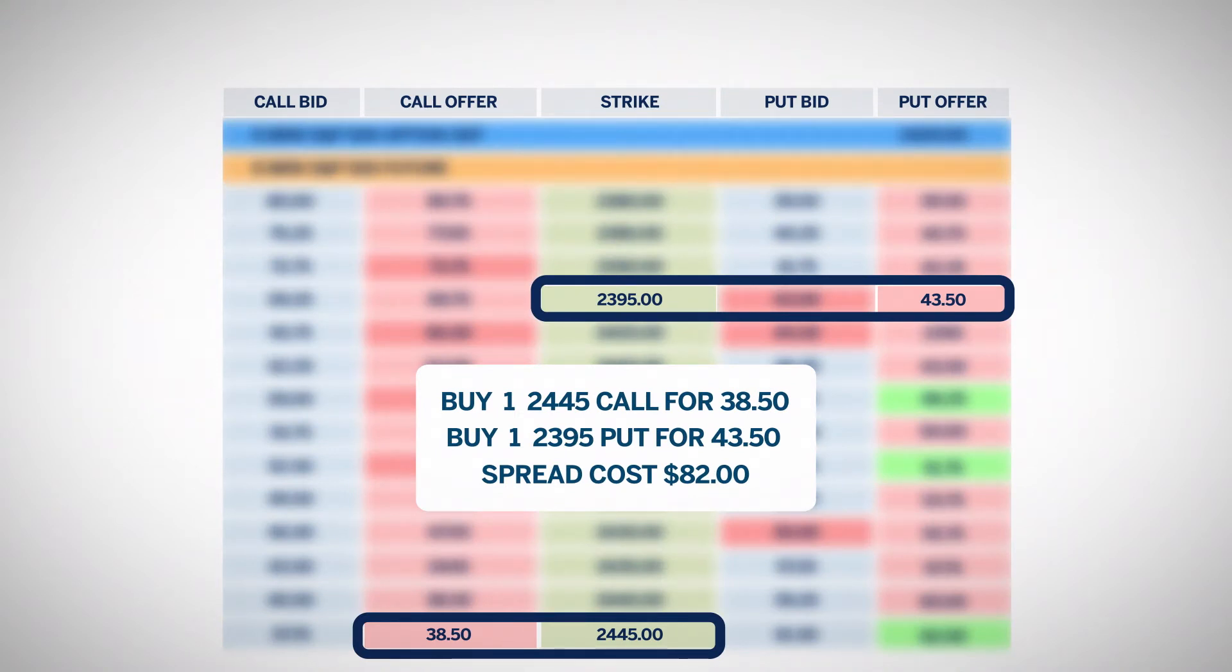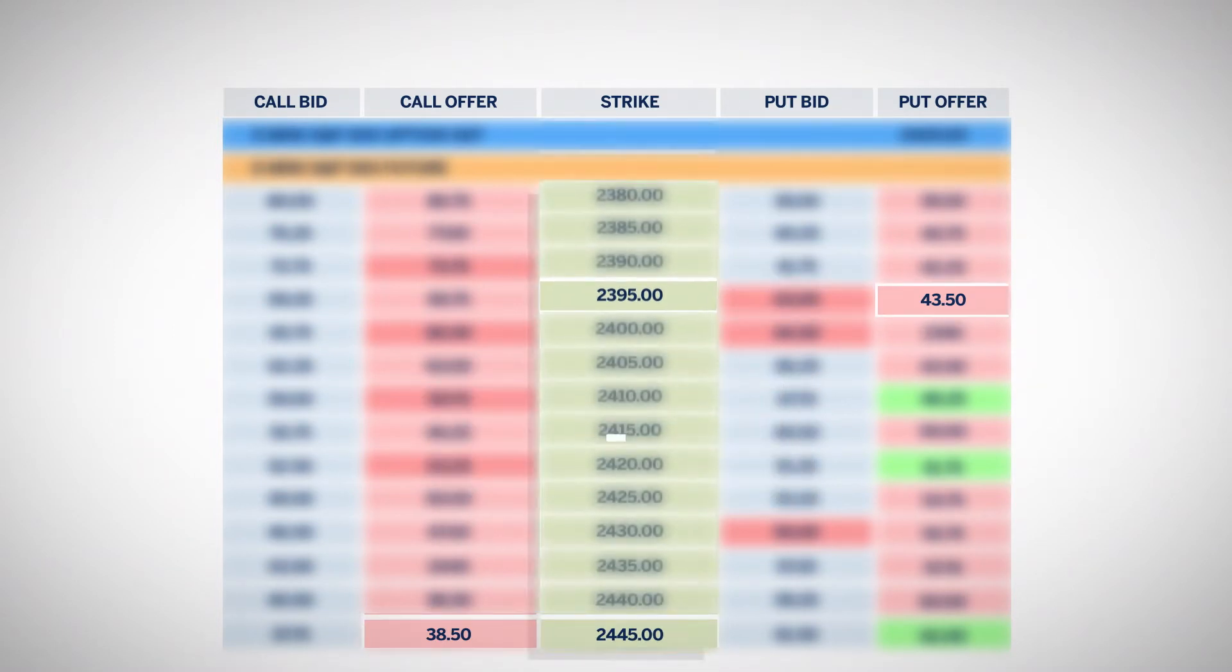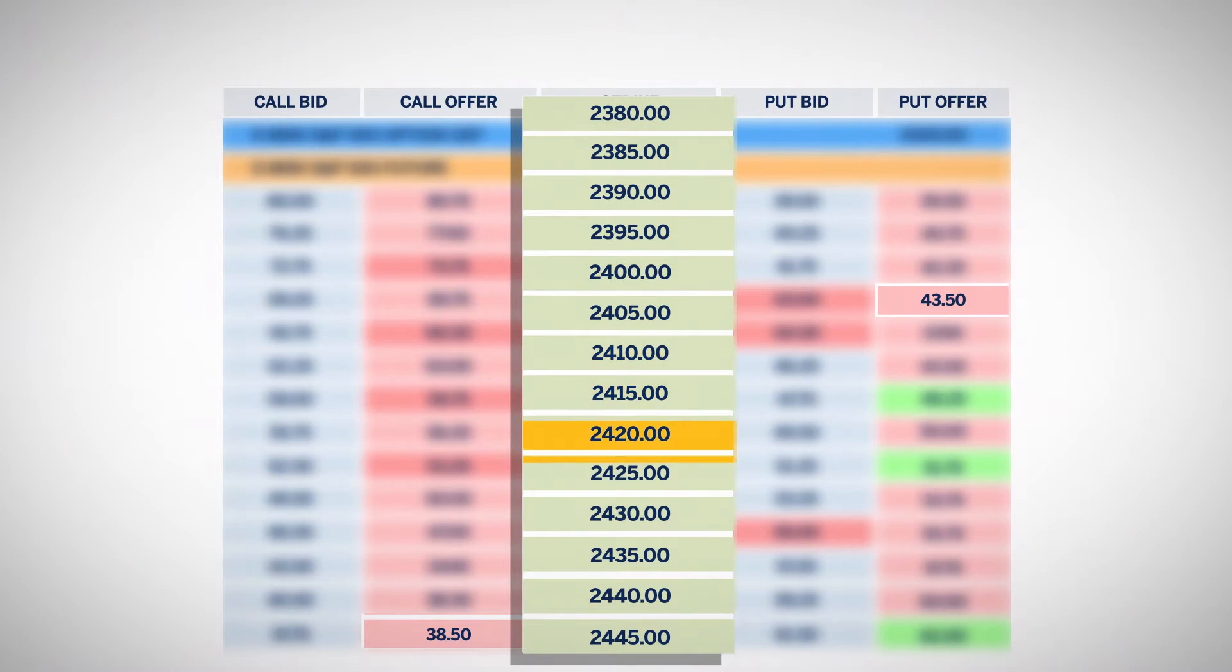The cost of the strangle in this example would be 82 even. Traders will buy the strangle if they expect the market to start moving, but are not sure which way.